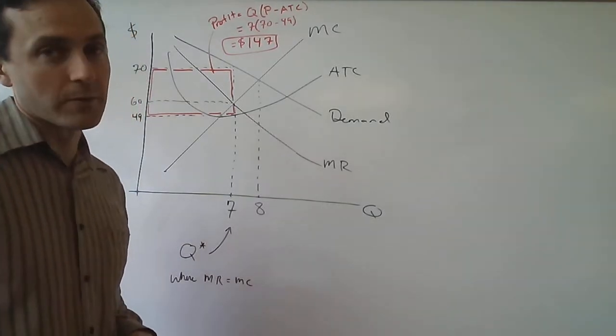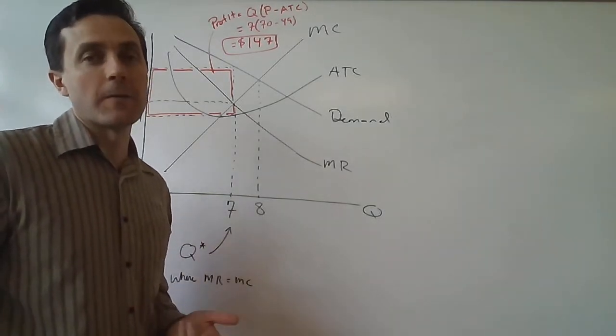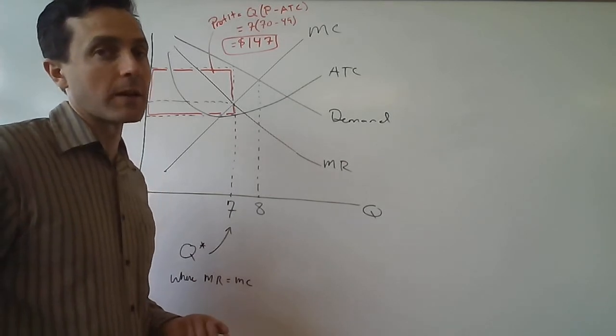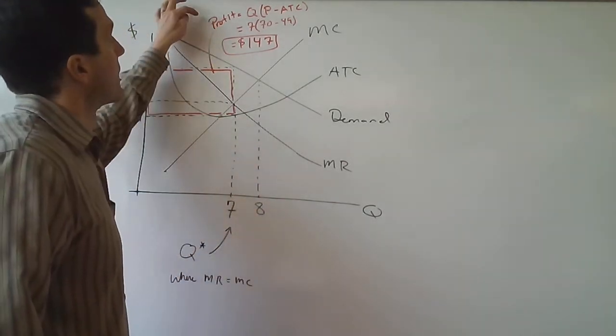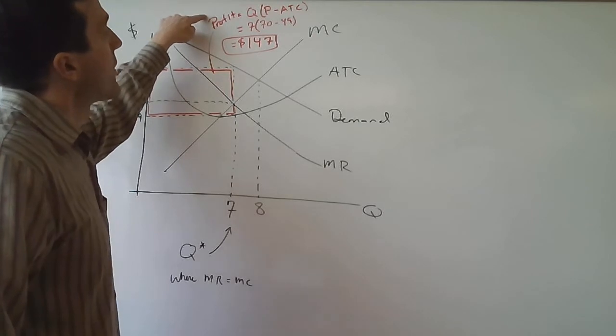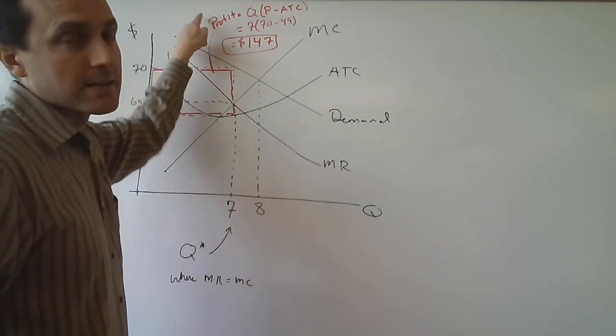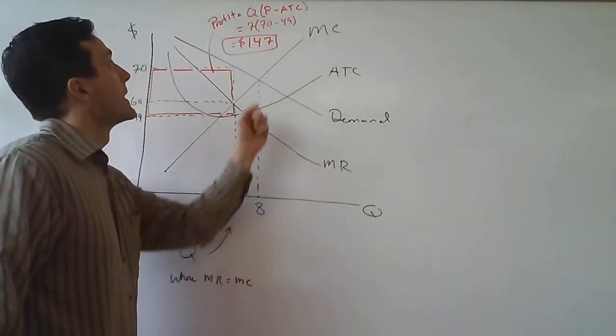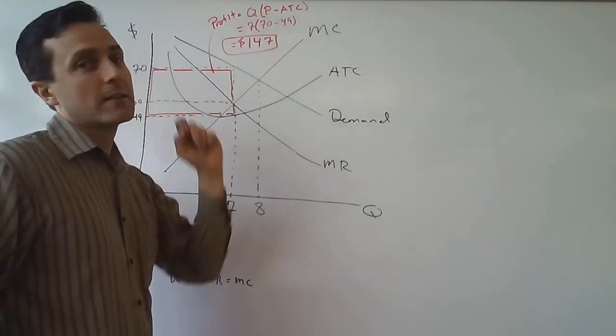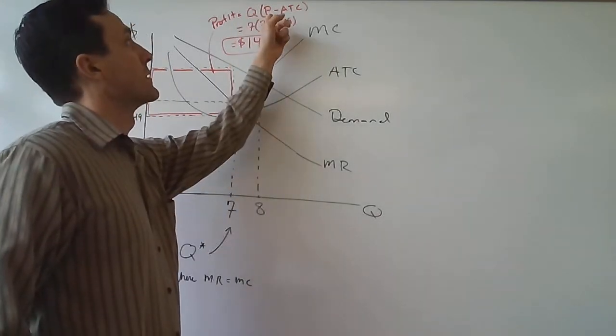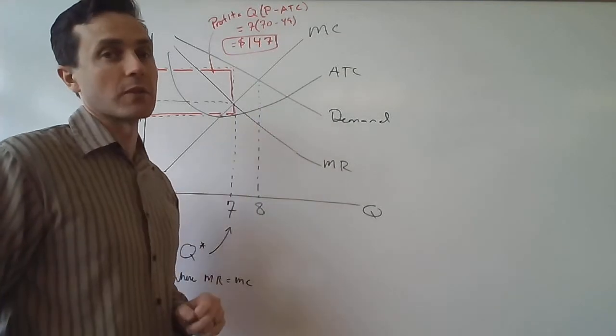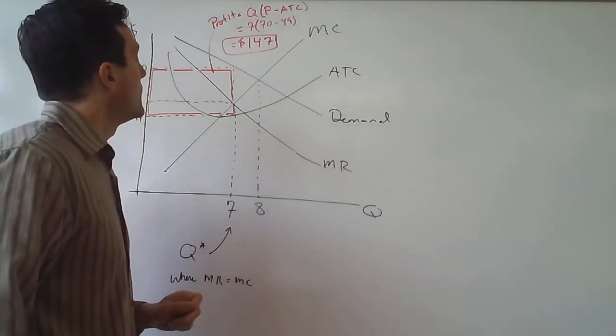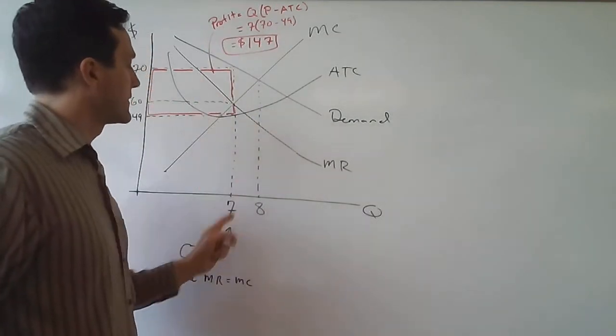Now again, we're trying to find the value of this firm's profits. If you remember back, profit has this formula: it's equal to the quantity times the profit per unit, and profit per unit is price minus average total cost. So we have the quantity of seven.